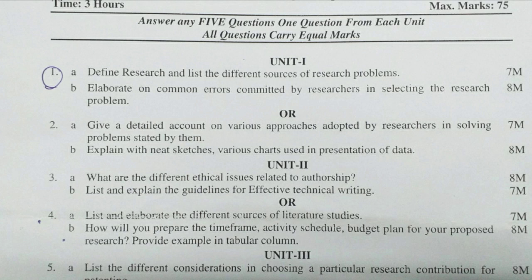Unit 1 — First question A bit: Define research and list the different sources of research problems (7 marks). B bit: Elaborate on common errors committed by researchers in selecting the research problem (8 marks). Second question A bit: Give a detailed account of various approaches adopted by researchers in solving problems (7 marks). B bit: Explain with neat sketches various charts used in presentation of data (8 marks).